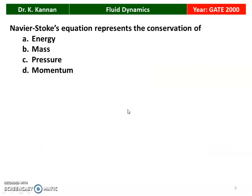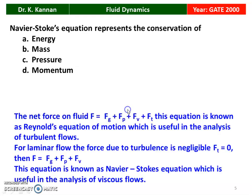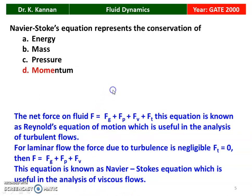Next question from the 2000 question paper: the Navier-Stokes equation represents the conservation of — energy, mass, pressure, or momentum? The net force on the fluid F equals Fg plus Fp plus Fv plus Ft, where Fg is the gravitational force, Fp is the pressure force, Fv is the viscous force, and Ft is the turbulence force. This is known as the Reynolds equation of motion, useful in turbulent flow analysis. For laminar flow, Ft equals 0, leaving gravitational, pressure, and viscous forces. This equation is known as the Navier-Stokes equation, useful in viscous flow analysis, and represents conservation of momentum.